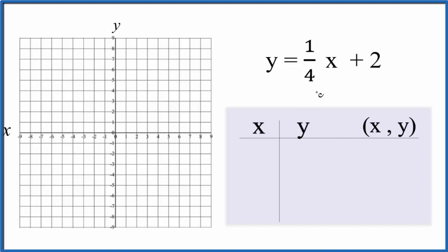So if I chose 4 for x, that would mean 1/4 times 4, that would equal 1. 1 plus 2 equals 3, so that's a little bit easier to work with. That would give us the point (4, 3), and that fits on our graph paper.